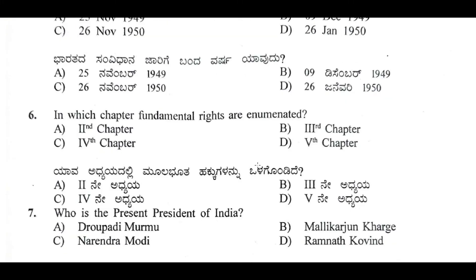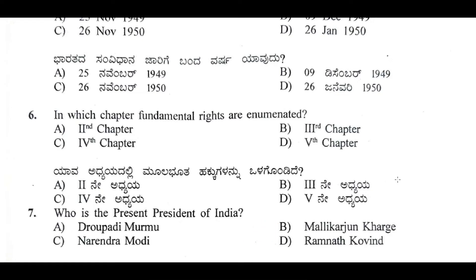The sixth question: in which chapter are the Fundamental Rights enumerated? Options are Second Chapter, Third Chapter, Fourth Chapter, and Fifth Chapter. The correct answer is Chapter Three — Option C. Articles 12 to 35 are contained in Part Three of the Constitution, which deals with Fundamental Rights.